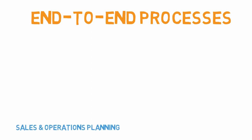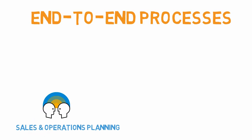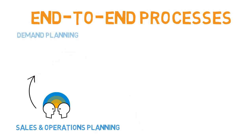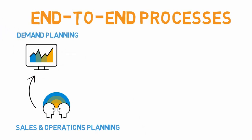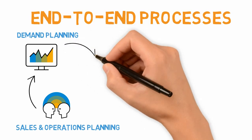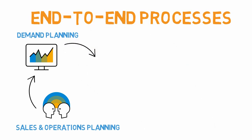Sales and Operations Planning: Achieve your financial targets by synchronizing tactical and strategic planning across all functions of your organization. Demand Planning: Actively shape your demand planning accuracy in the short, mid, and long term.